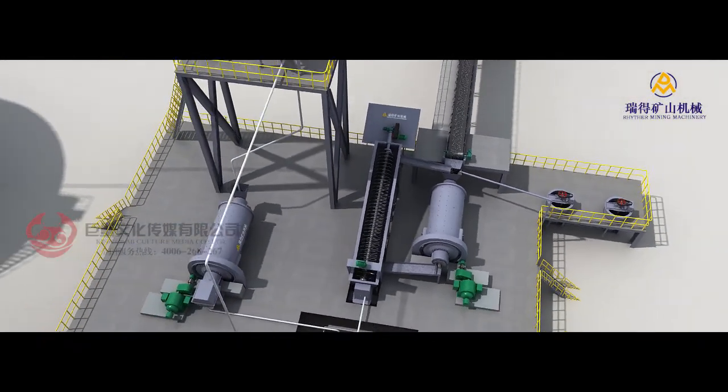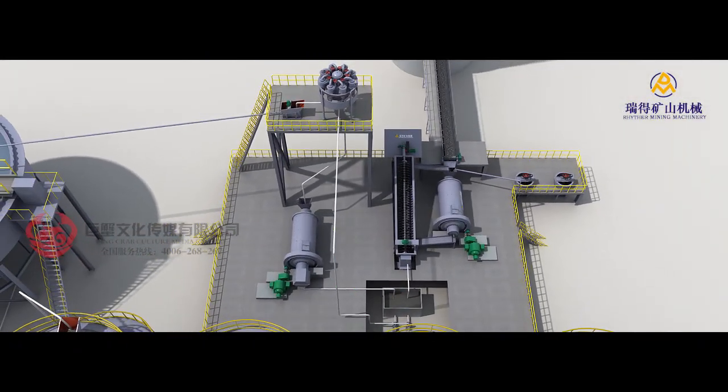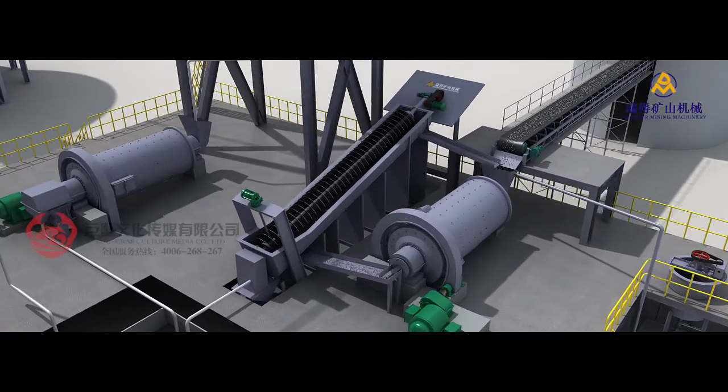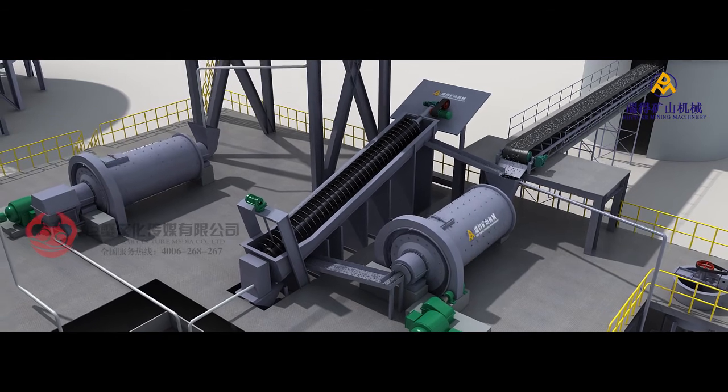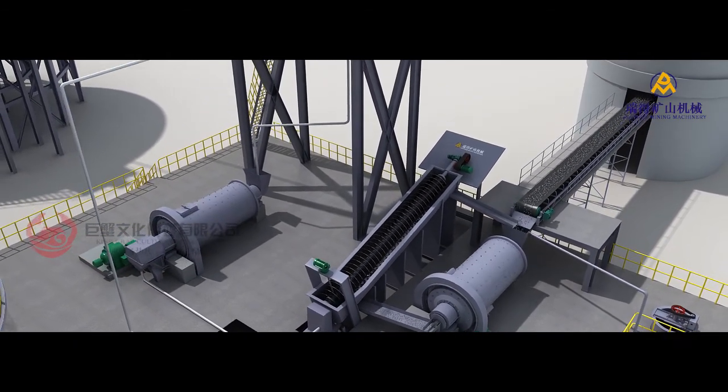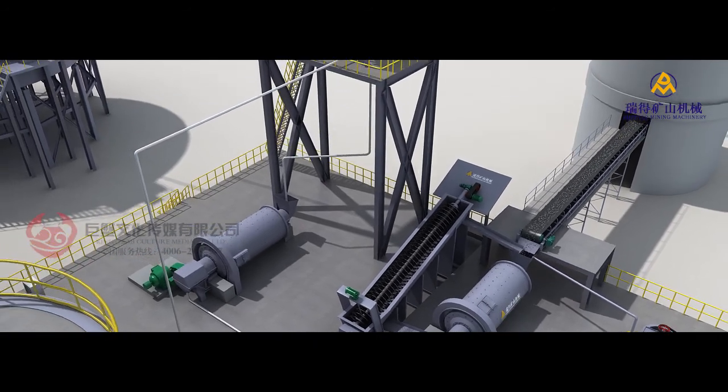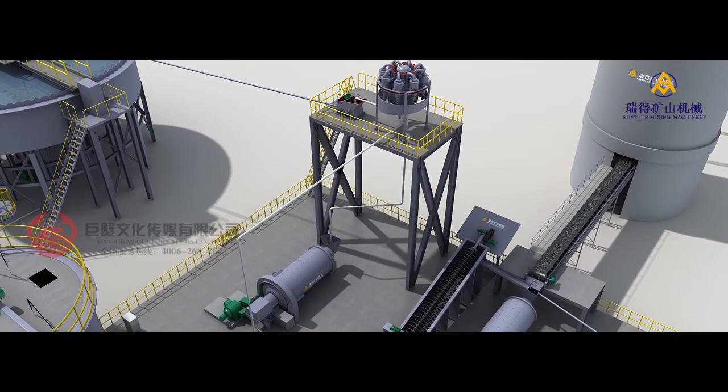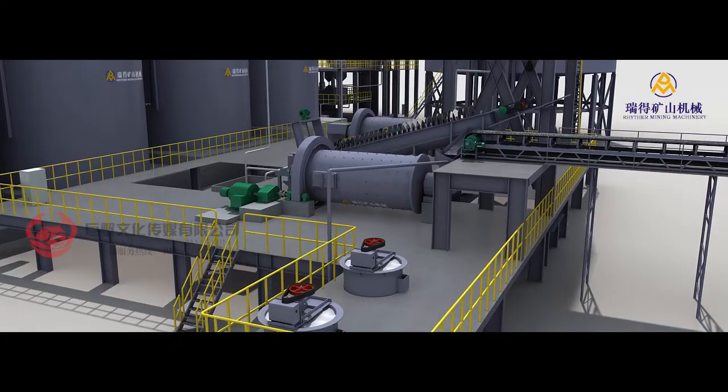To process oxidized gold ores with fine disseminated grain size of gold, two-stage closed circuit grinding process is adopted. Normally single stage grinding and classification operation uses grate ball mill with spiral classifier, and two-stage grinding and classification operation uses cyclone group with overflow ball mill. Wear resistant materials are used for lining of cyclone which increase its service life by 40%.